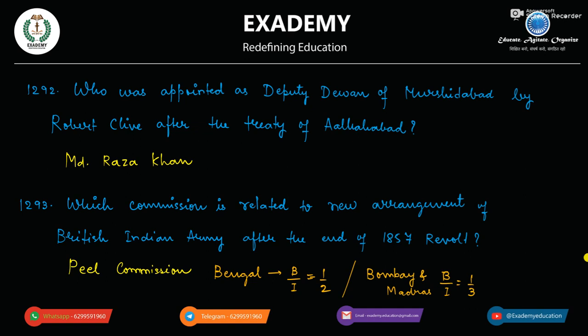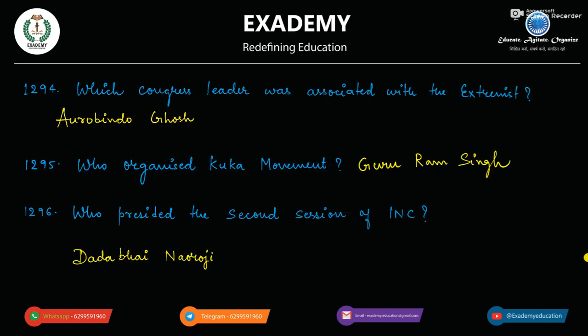Which commission is related to the new arrangement of the British Indian Army after the end of the 1857 revolt? Peel Commission Report. Bengal mein Peel Commission Report ke according, British to Indians ka ratio 1:2 hai. Aur Bombay aur Madras mein British to Indians ka ratio 1:3 hai.